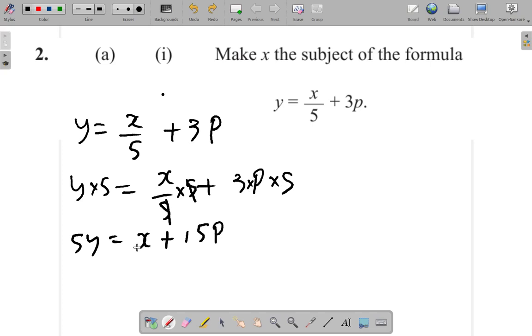Now, what you can do next is to subtract 15p from both sides. So you have 5y equals x plus 15p because you're going to end up with x equal.